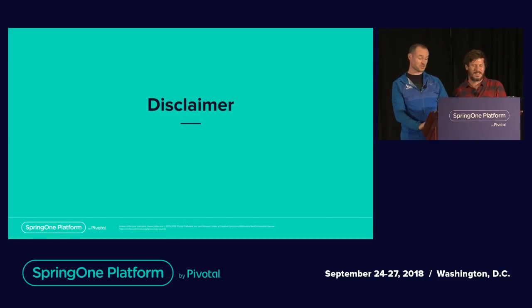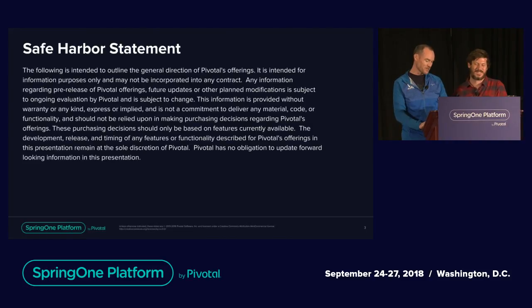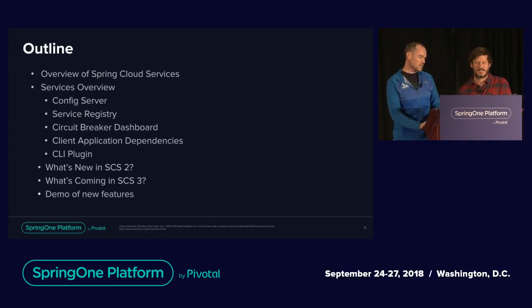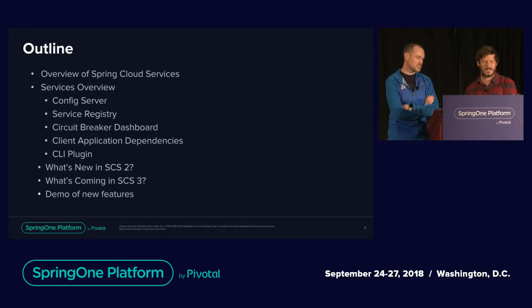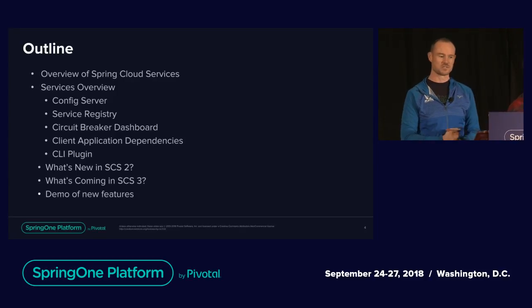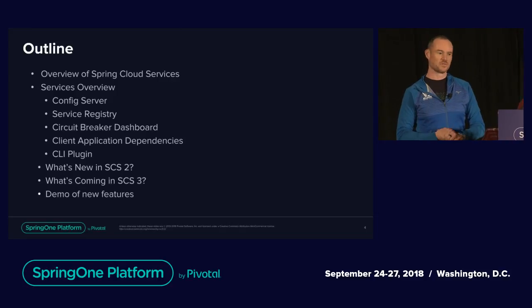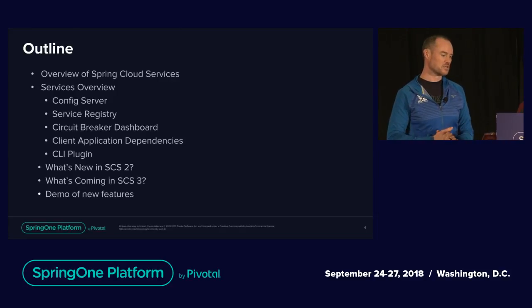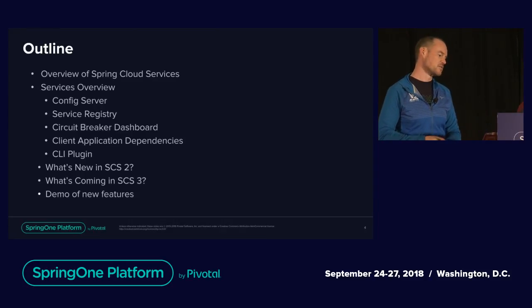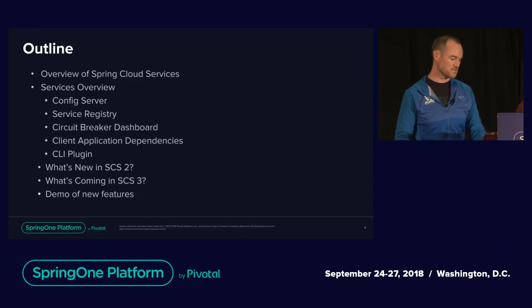Disclaimer: you're probably going to want to use SCS after the end of this talk — at least that's our hope. Safe harbor: we're going to be talking about a few forward-looking things here, what's coming next in next versions of SCS. Here's our outline: we're going to do an overview of SCS as it currently stands, talk about the individual services, dependencies for building a client application with SCS, the CLI plugin, what's new in version 2.0 that came out this summer, and then I'm going to hand off to Ali, who's going to cover what's coming next in SCS 3 and give some demos.